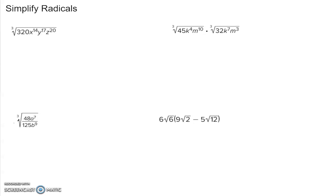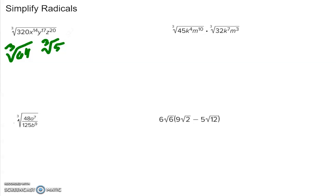When finding the cube root, I should think of my cubic numbers. The first four cubic numbers are 1, 8, 27, and 64. I need to find which of those can divide into 320. 64 can be divided into 320, so I can write the cube root of 64 times the cube root of 5, which gives me 320. The cube root of 64 is 4, and then I have the cube root of 5 left over.